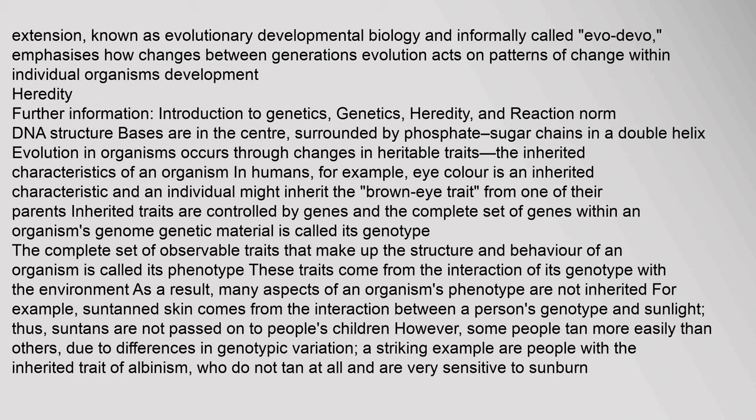Heredity: DNA structure has bases in the center, surrounded by phosphate-sugar chains in a double helix. Evolution in organisms occurs through changes in heritable traits — the inherited characteristics of an organism. In humans, for example, eye color is an inherited characteristic and an individual might inherit the brown-eye trait from one of their parents. Inherited traits are controlled by genes, and the complete set of genes within an organism's genome — the genetic material — is called its genotype.